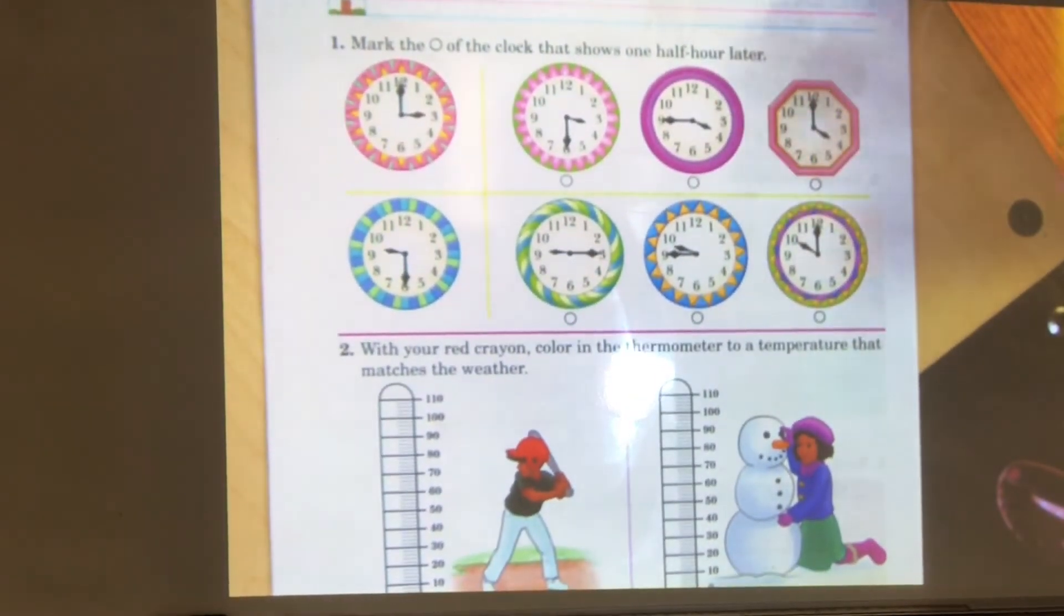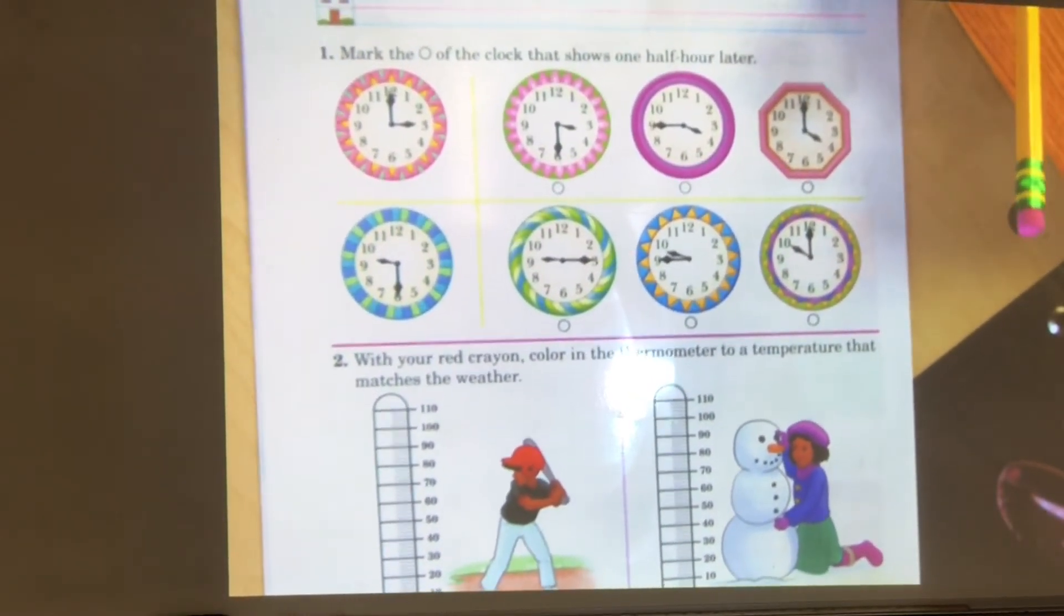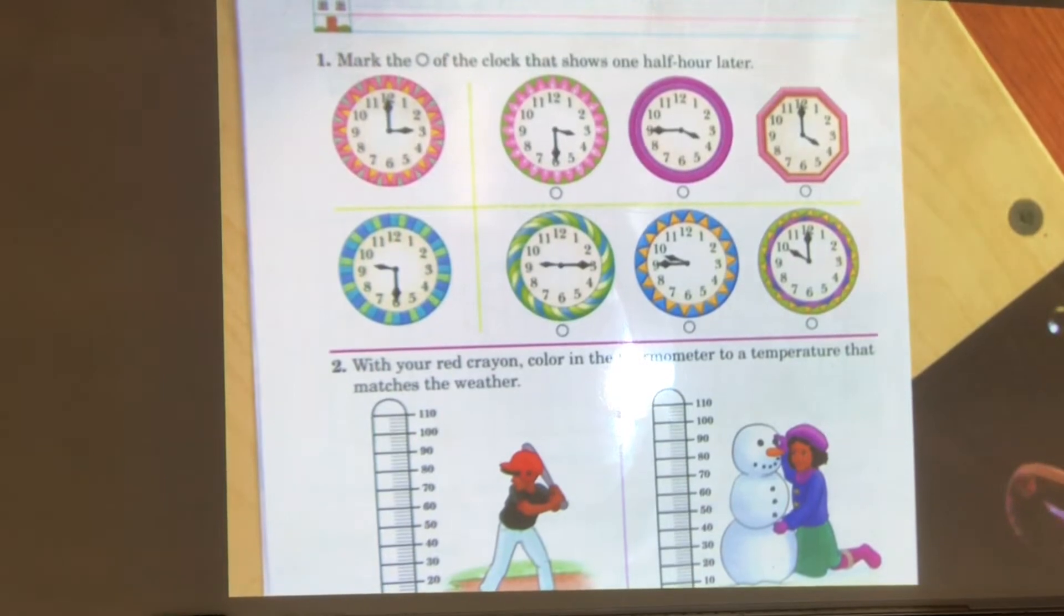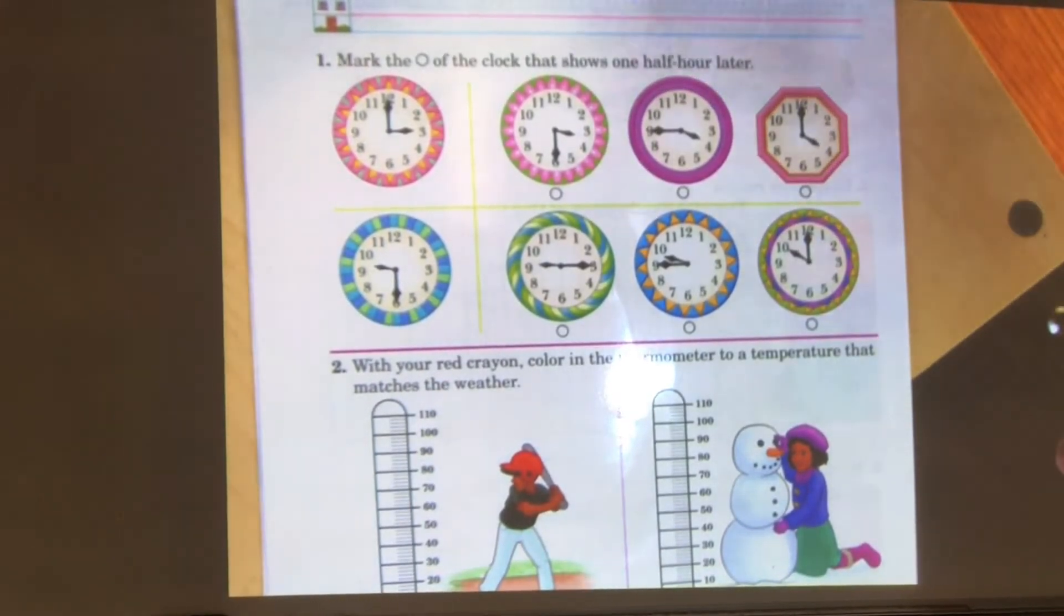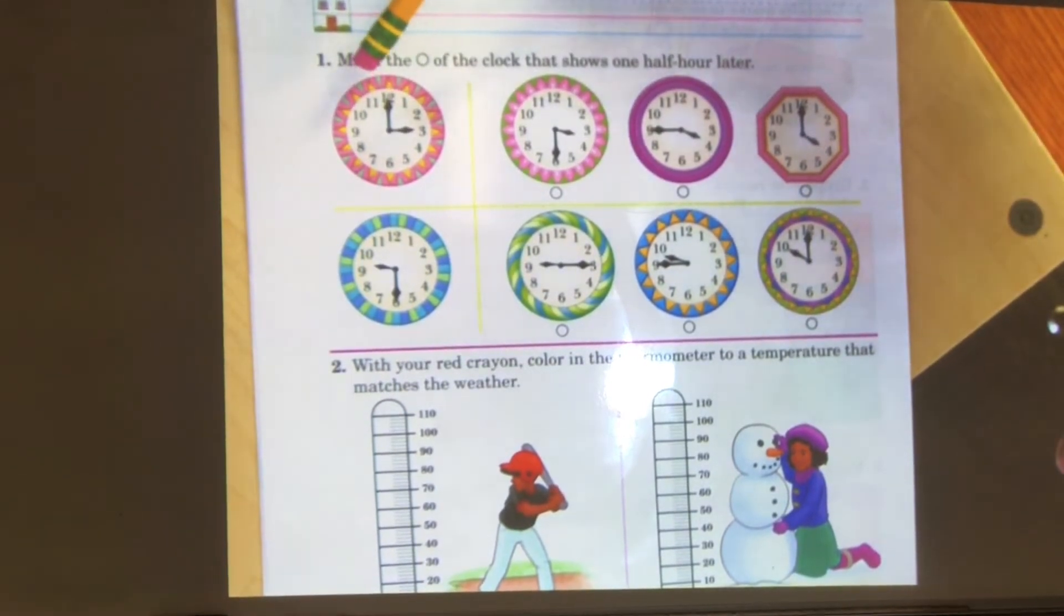Alright, let's take a look at our next sheet. This is our math sheet, page 299. Mark the circle of the clock that shows one half hour later. So you have a clock here. It says three o'clock.